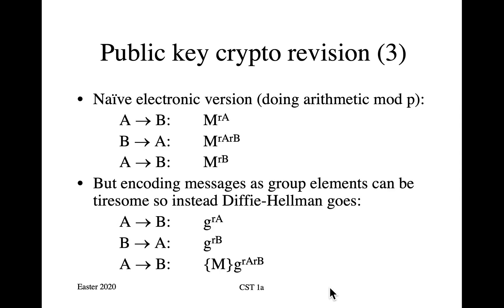Now let's look at the electronic version. As you saw in discrete maths, a naive electronic version can be done by using modular exponentiation as a one-way function — in fact, as a one-way homomorphism. Alice can send to Bob the message M, encrypted by raising it to the power R-A, where she knows the random number R-A. Bob can then send it back having raised it to the power R-B, and Alice can then undo her exponentiation, and Bob can undo his.